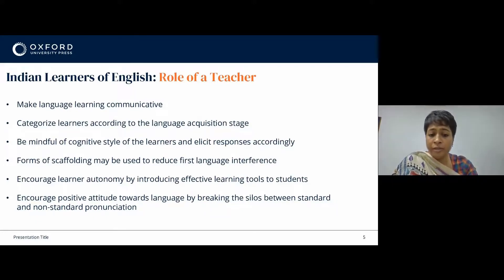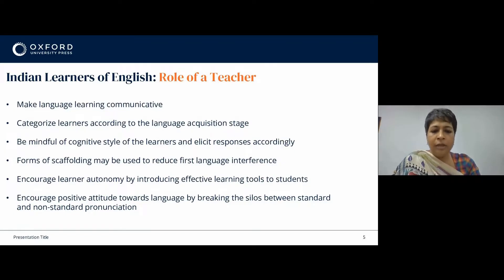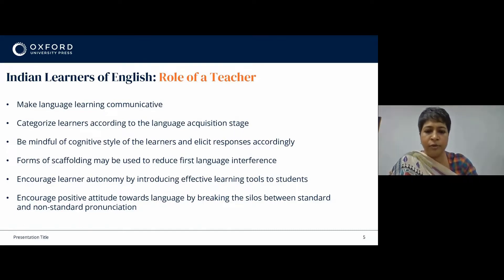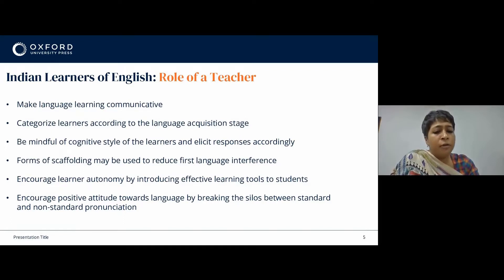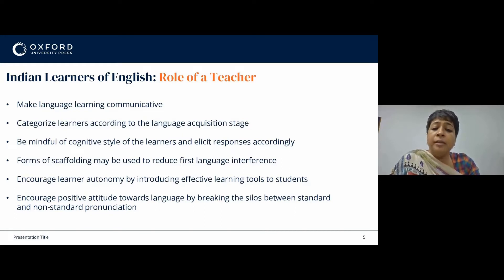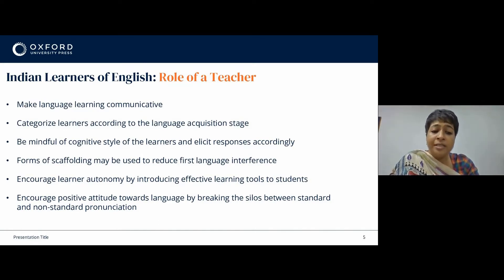Teachers should also encourage a positive attitude towards language by breaking the silos between standard and non-standard pronunciation. At a very young age, children tend to prefer their own language variety. But most of them gradually acquire the attitudes of the dominant group, showing a clear status preference for standard over non-standard. The English language in India is associated with a lot of prestige and learners are often cautious about their pronunciation, trying to speak English only when confident about the standard British pronunciation. Therefore, it is important that the silos between standard and non-standard pronunciation are broken, and teachers themselves refrain from associating variance with prestige and instead encourage positive attitude towards all languages and varieties.